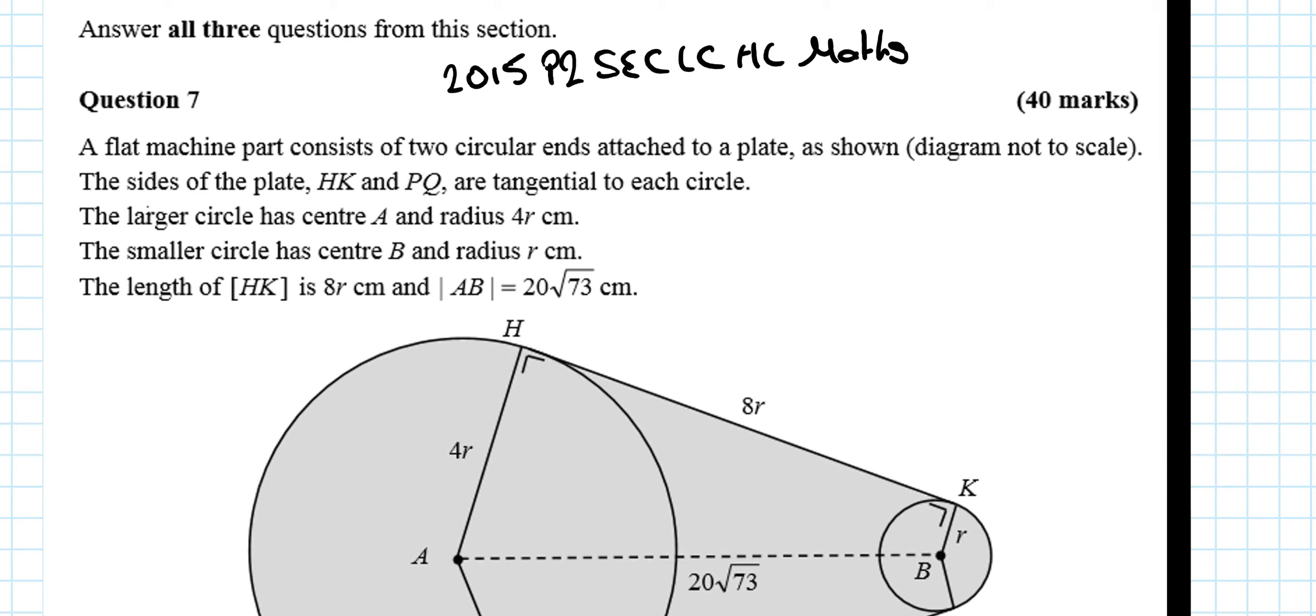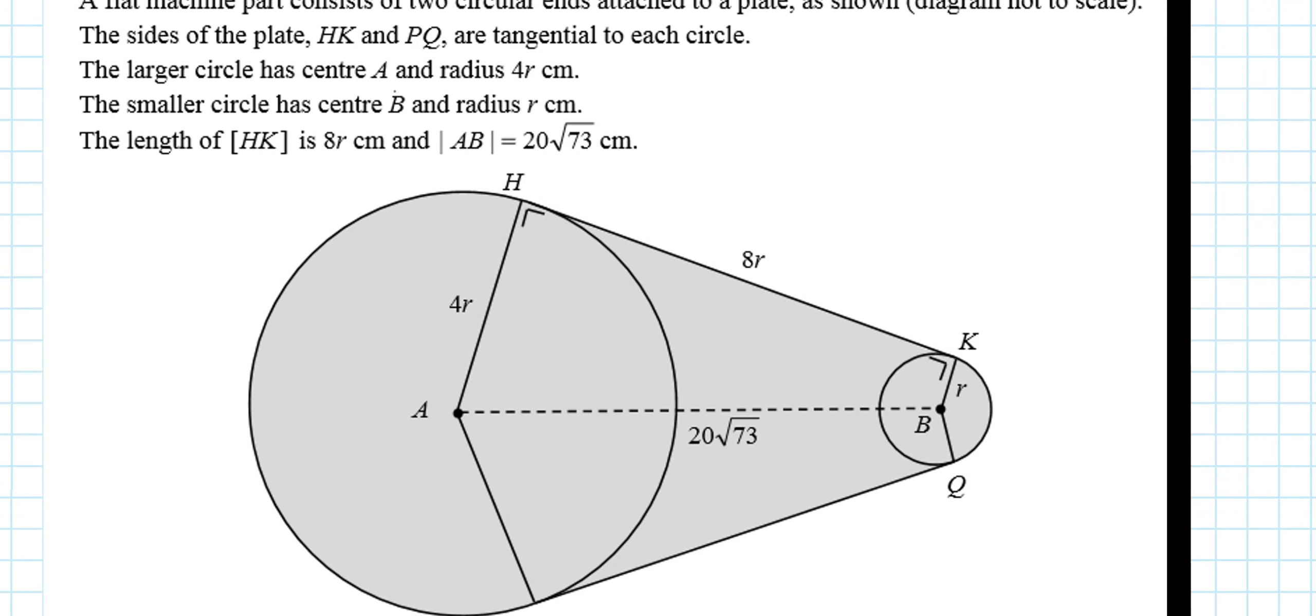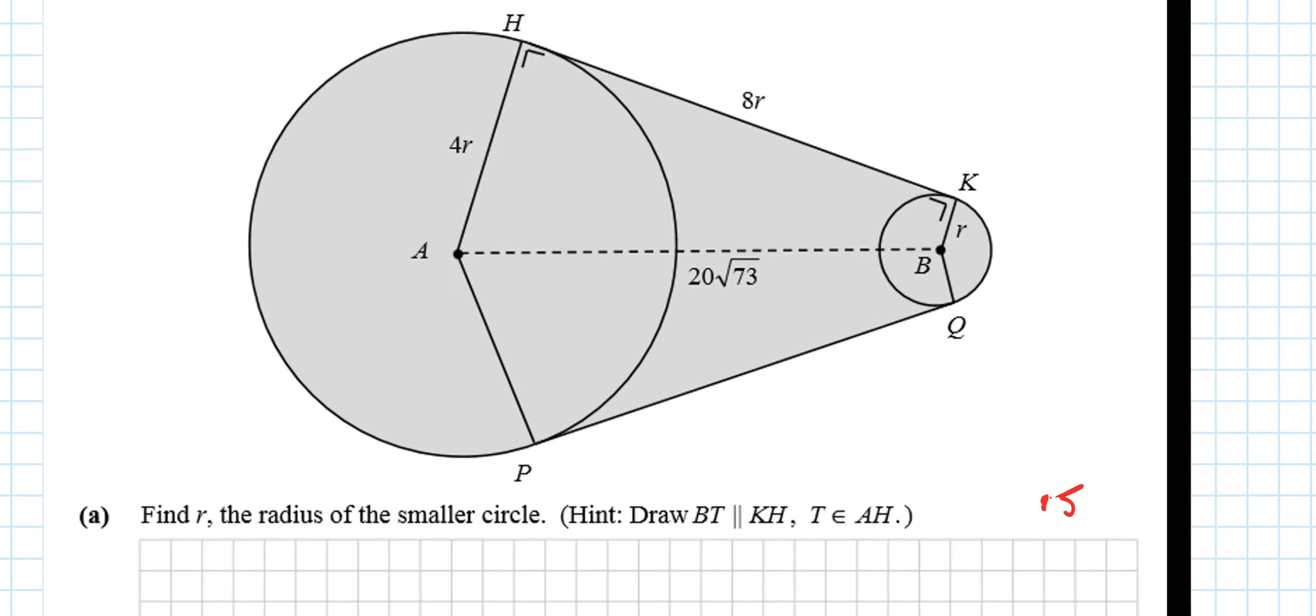The flat machine part consists of two circular ends attached to a plate as shown, diagram not to scale. The sides of the plate, HK and PQ, are tangential to each other, so there's a right angle here and a right angle here. They've marked in right angles there and there because we know we have right angles. The larger circle has centre A and radius 4r, and the smaller circle has centre B and radius r. The length HK is 8r, and AB is 20 root 73. All of that information is marked in.